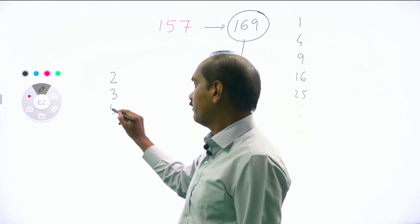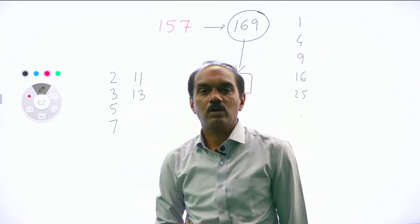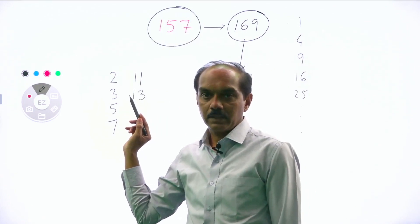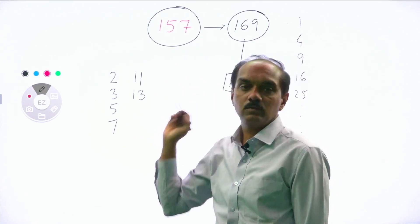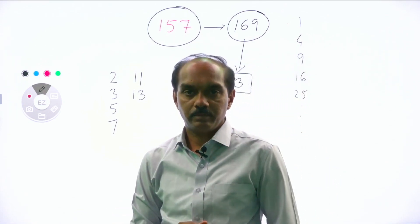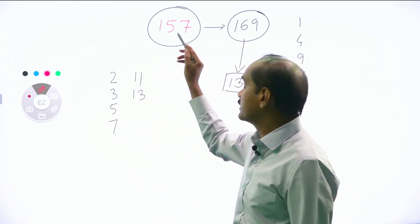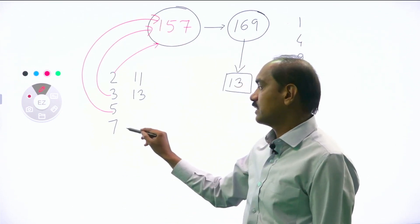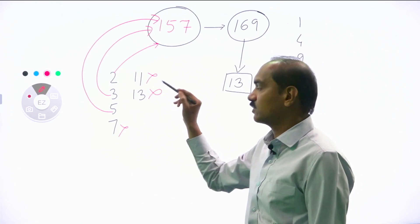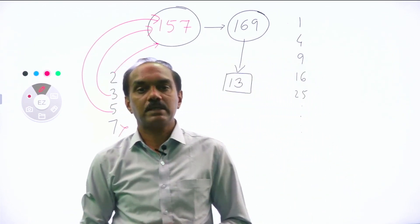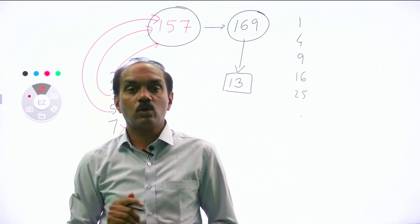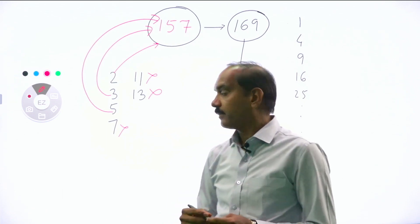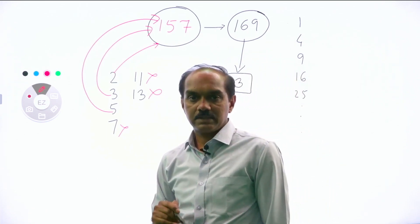You will have to check the divisibility of 157 only by these numbers. If any of these divide 157, then 157 is not a prime number. Two cannot divide 157, three cannot, five cannot, seven cannot, eleven cannot, thirteen also cannot — therefore 157 is a prime number. You do not have to check divisibility by 17, 19 and beyond — that list is never ending. This is the trick.